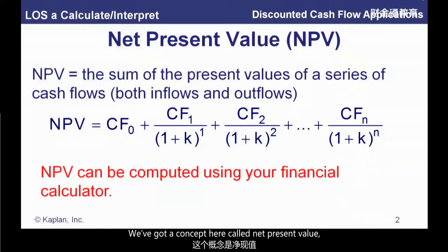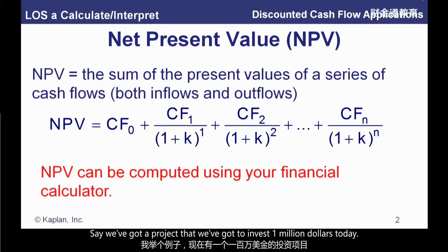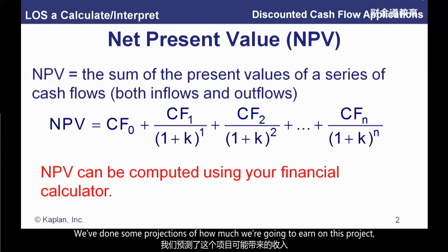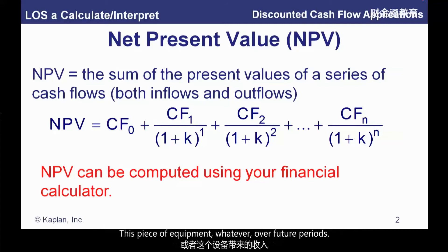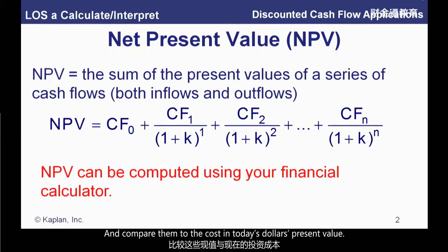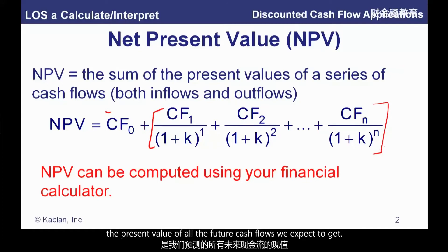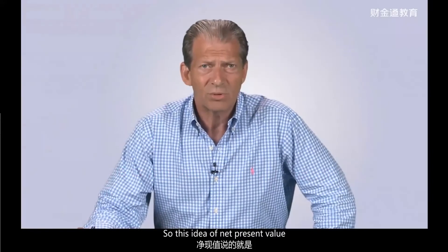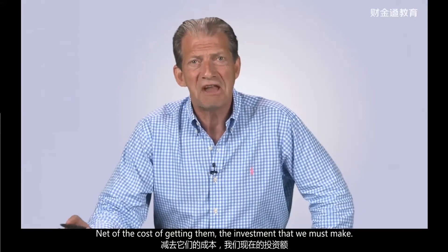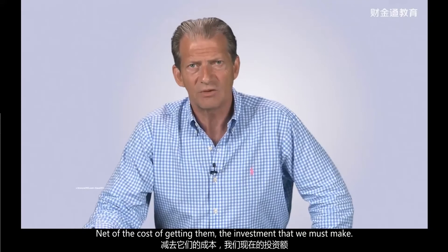We've got a concept here called Net Present Value, and we use this with projects. Say we've got a project where we've got to invest a million dollars today, and we've done some projections of how much we're going to earn on this project — this piece of equipment, whatever — over future periods. Now we've got to look at the present values of those future cash flows and compare them to the cost in today's dollars. So CF zero, that's usually a negative number — the initial outlay — and this piece over here is the present value of all the future cash flows we expect to get.